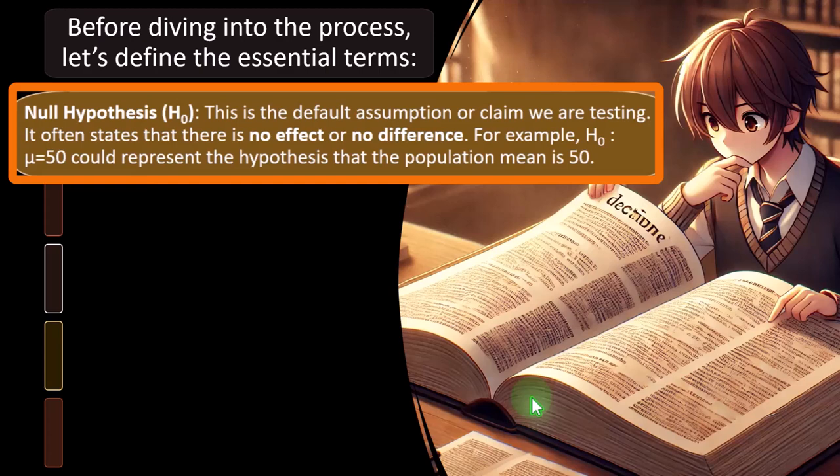Before diving into the process, let's define the essential terms. The null hypothesis, often abbreviated as H-sub-naught or H₀, is the default assumption or claim we are testing. In our heights example, the null hypothesis would be that the national average stands — that it is correct. It often states there is no effect or no difference. For example, H₀ = 50 could represent the hypothesis that the population mean is 50.